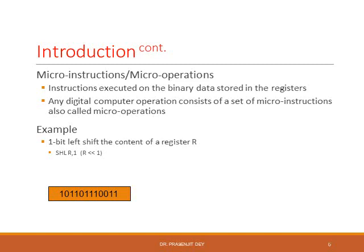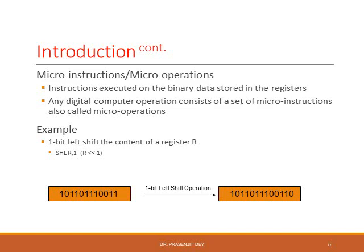Here in this example, you can see a one-bit left shift of the register content. The corresponding code is shn R comma 1. This is the content of the R register. If you do a one-bit left shift operation, this will be the next operand value of the R register.